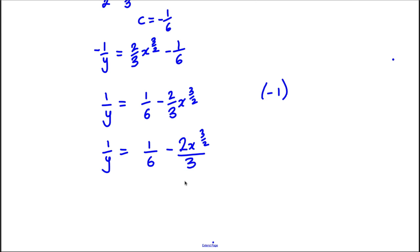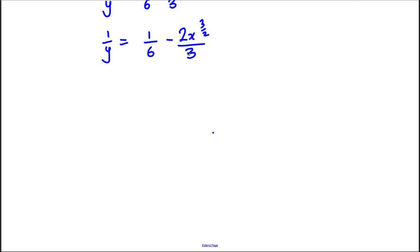Now if we multiply this fraction here on top and bottom by 2, then we'd have 1/6 - 4x^(3/2)/6. Now we can combine the fractions, so it would be (1 - 4x^(3/2))/6 as follows.